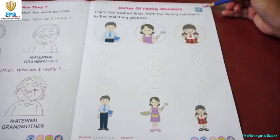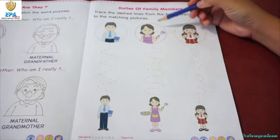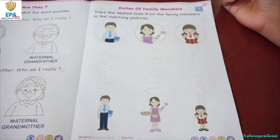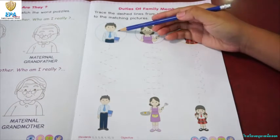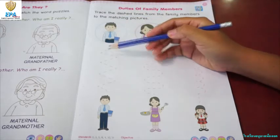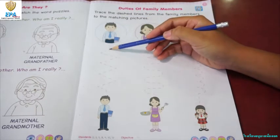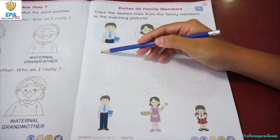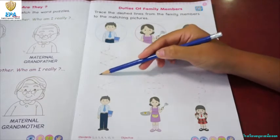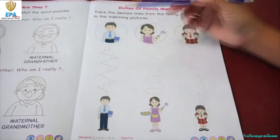Let's review first: father, mother, and the child. Now let's go to the father. The father works for the family. Let's trace the dust lines from the family members to the father.